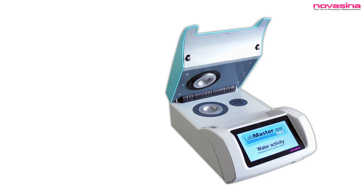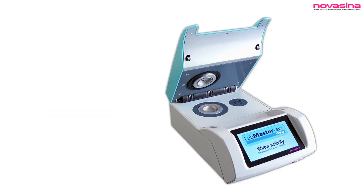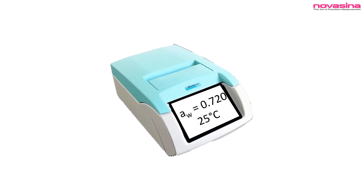So you have a water activity instrument, or maybe you're thinking about getting one. The test seems pretty simple: you place a sample in the instrument, push the read button, the test runs, and a water activity value appears on the screen. The water activity reported is 0.720 at 25°C.